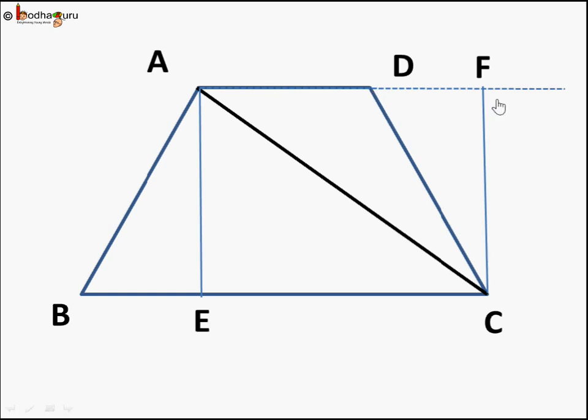The height should always meet at the base at 90 degrees. You can't meet here at 90 degrees. So you have to extend this here and it meets here. But remember, you are not going to call this triangle's height base as AF. Base will remain as AD. Height will be CF.